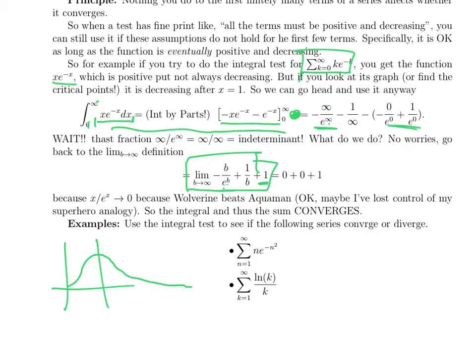These guys turn into 1. What does b over e to the b do? That's easy. As b goes to infinity, e to the b grows faster, so this whole thing goes to 0. This converges, so the integral and the sum converges.